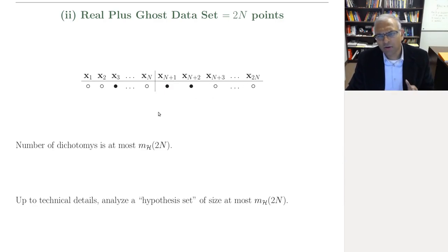And so we really need to look at what your hypothesis set, how many functions your hypothesis set can implement on all these two n points. And so that means that we need to analyze the growth function for two n.